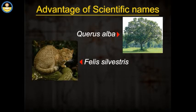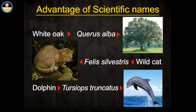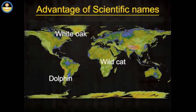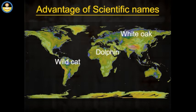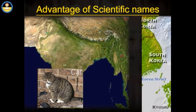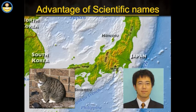Many people wonder why scientists use complicated, hard-to-pronounce names when speaking about familiar animals and plants. Common names such as white oak, wildcat, and dolphin are accepted in casual communication and serve their purpose in a particular community which already recognizes that animal in its local language. But it becomes difficult as soon as that name crosses the boundary of that community. For example, in India you call a cat 'cat', but in Japan nobody would understand that. However, if you were to tell a Japanese scientist 'Felis catus', he would understand what organism you are talking about.